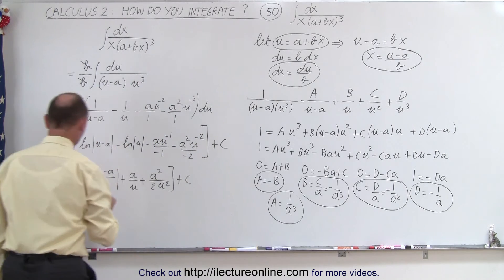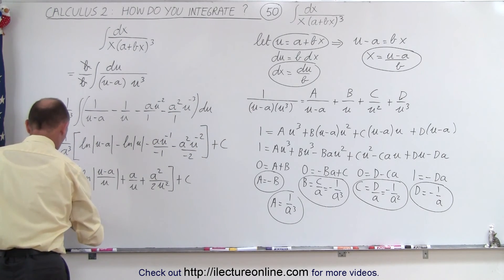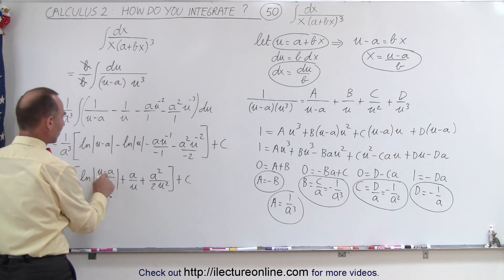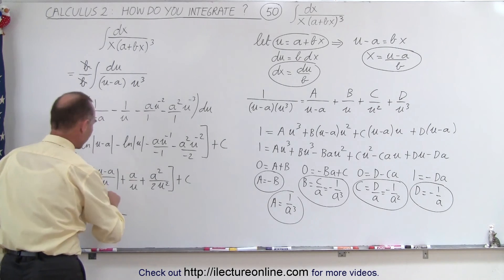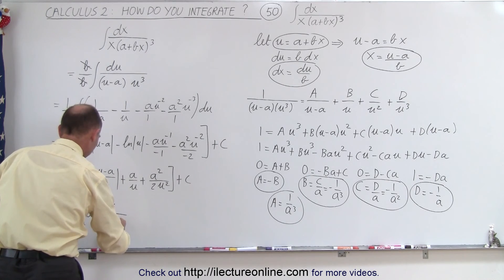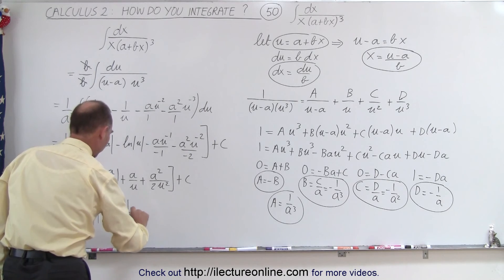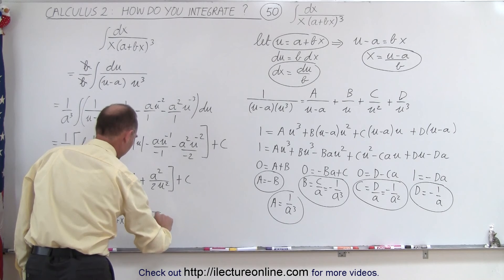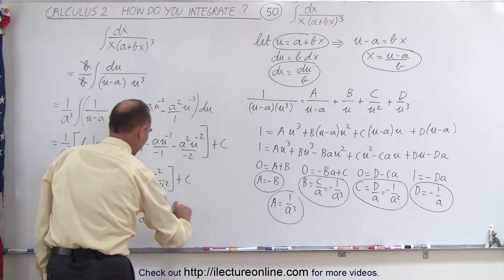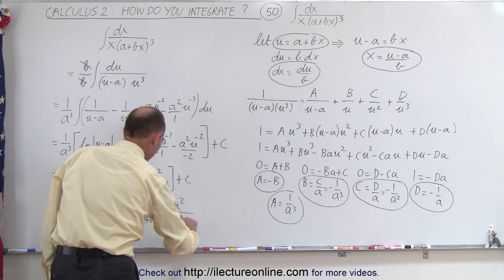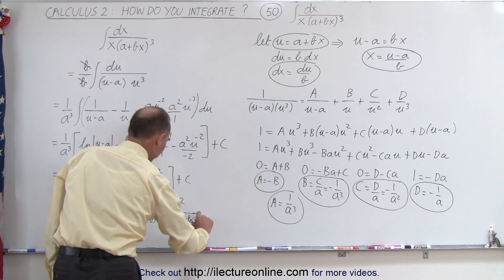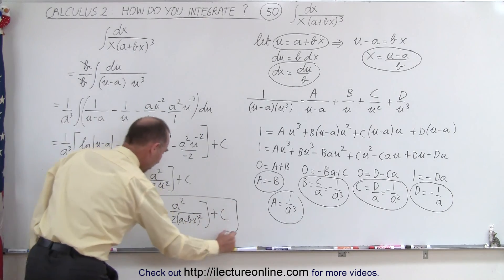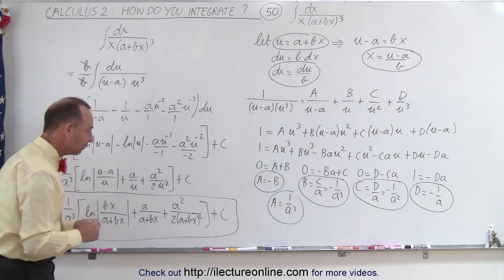And finally, we can replace back what u is equal to, because u is a plus bx. So we get 1 over a cubed times the natural log of — now u minus a is bx in the numerator, divided by a plus bx — plus a divided by a plus bx, plus a squared over 2 times a plus bx quantity squared, plus a constant of integration. And this is the correct result of that particular integral.